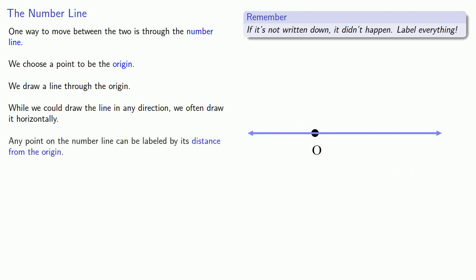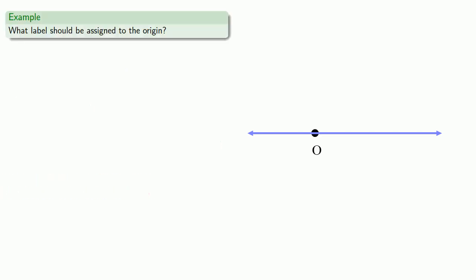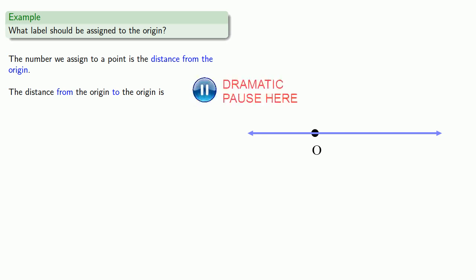And any point on the number line can be labeled by its distance from the origin. And this leads to the first important problem of the number line. What label should be assigned to the origin itself? So remember, the number we assign to a point is the distance from the origin. And so the origin itself, we want to know the distance from the origin to the origin. And that distance is 0. And so we should label the origin with the number 0.